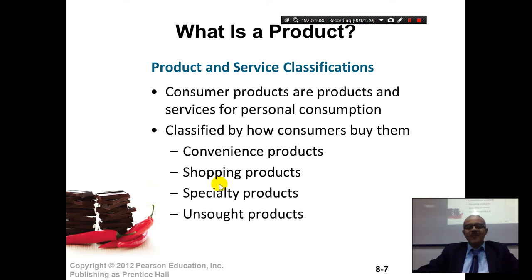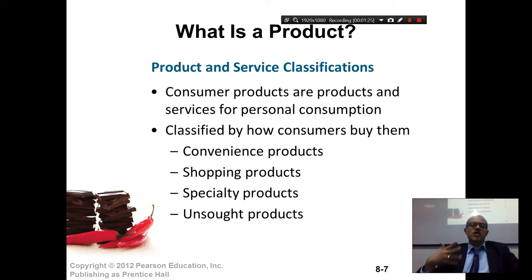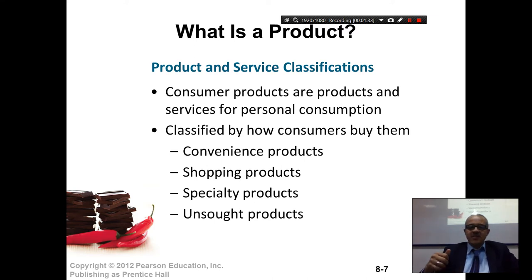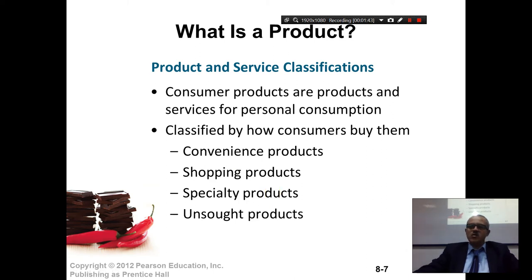Shopping products are where you go to the first shop and compare — let's say furniture. You look at the furniture, you try it: this is red, this is green, this is soft. Shopping products — you go from one place to another. Clothes also: you go, you shop for clothes. And specialty products are very specialized, and you're willing to go the extra mile.